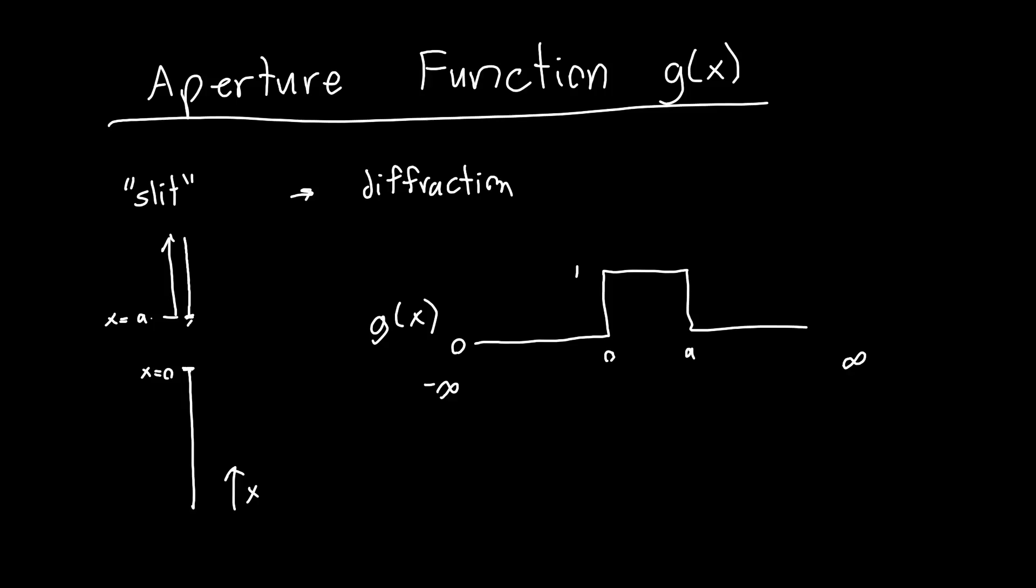What if we had a slightly opaque slit? Maybe we can still let some light through, but not all of it. Then our aperture function just becomes something slightly smaller. So instead of 1, maybe now it's 1 half, so we're letting half of the light through.